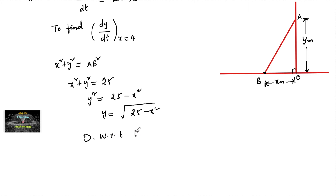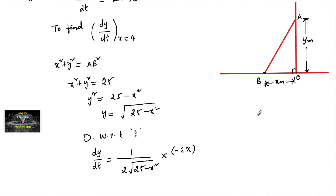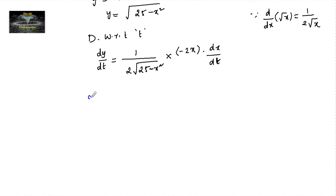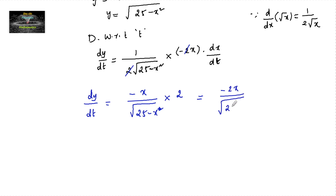We differentiate with respect to t. So dy/dt equals, using the chain rule on √(25 − x²), we get 1 upon 2√(25 − x²) into the differentiation of (25 − x²) which is −2x, multiplied by dx/dt. Since dy/dx of √x is 1 upon 2√x, this simplifies to dy/dt = −x / √(25 − x²) × dx/dt. Substituting dx/dt = 2, we get dy/dt = −2x / √(25 − x²).